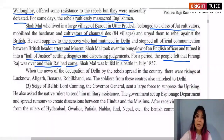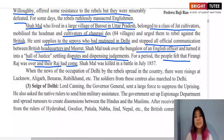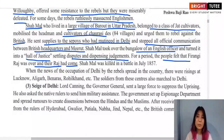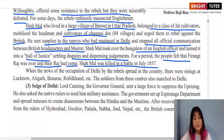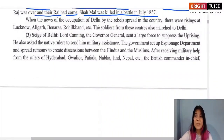For a period, the people felt that firangi raj was over and their own raj had come. Although initially they were able to fight off the British opponents, this did not last long. Shah Mal was killed in battle in July 1857.